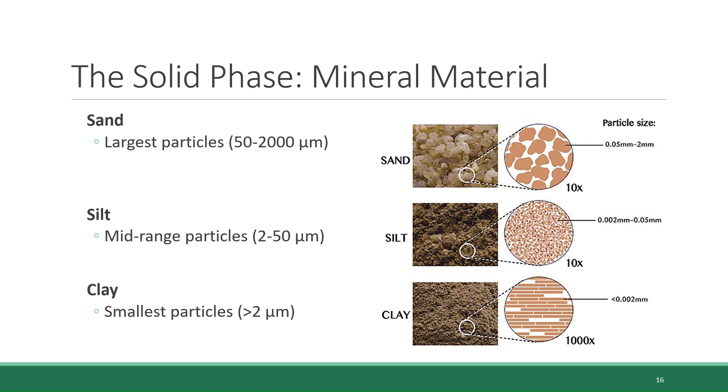A silty soil, being in the mid-range in particle size, has moderate drainage and retention of water and nutrients, while a soil that is rich in clay has poor drainage, because the clay particles are so small that they pack together very tightly without much space in between. But on the other hand, clay also retains water and nutrients very well.